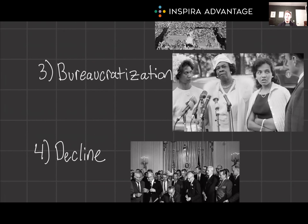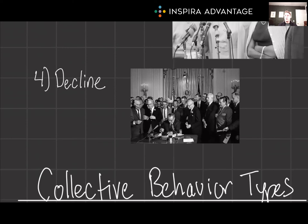As the movement grew, it became more organized and structured. Organizations like the Southern Christian Leadership Conference (SCLC) and the Student Nonviolent Coordinating Committee (SNCC) played key roles in strategizing and planning protests, sit-ins, and freedom rides. Notice that once the acronyms start coming in, that's when we are undergoing bureaucratization. This stage involves the formation of the movement's activities and the establishment of clear leadership roles. The decline of the civil rights movement can be seen in the late 1960s and early 1970s, as major legislative victories were achieved, including the Civil Rights Act of 1964 and the Voting Rights Act of 1965. While these successes marked significant progress, they also led to a decrease in mobilization and fragmentation of the movement into various factions focusing on different issues.